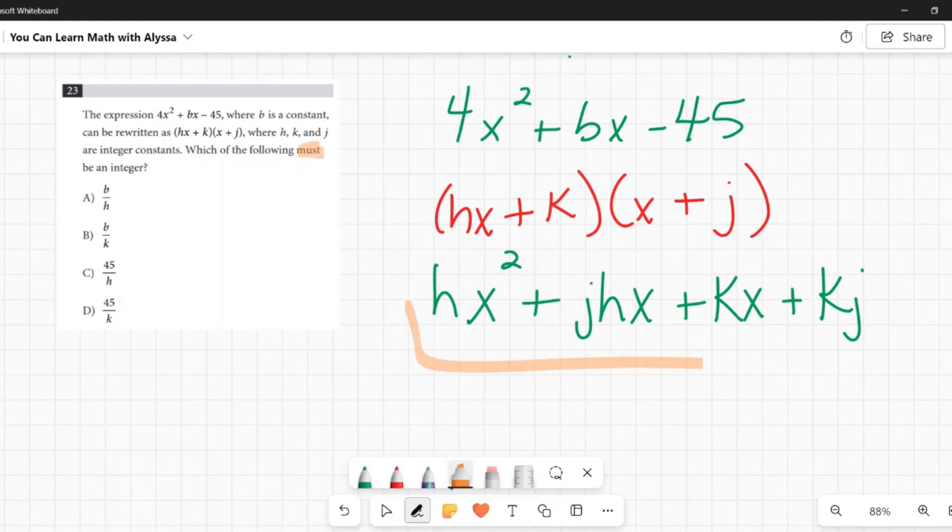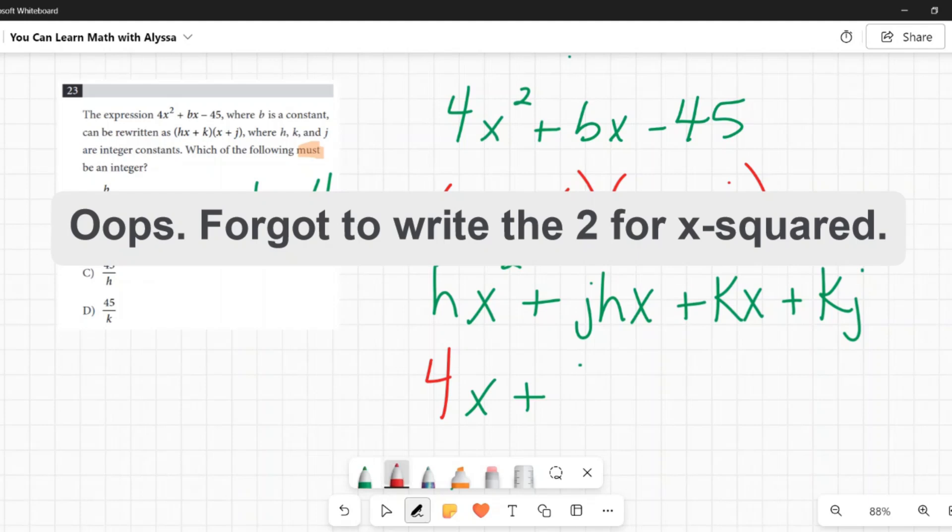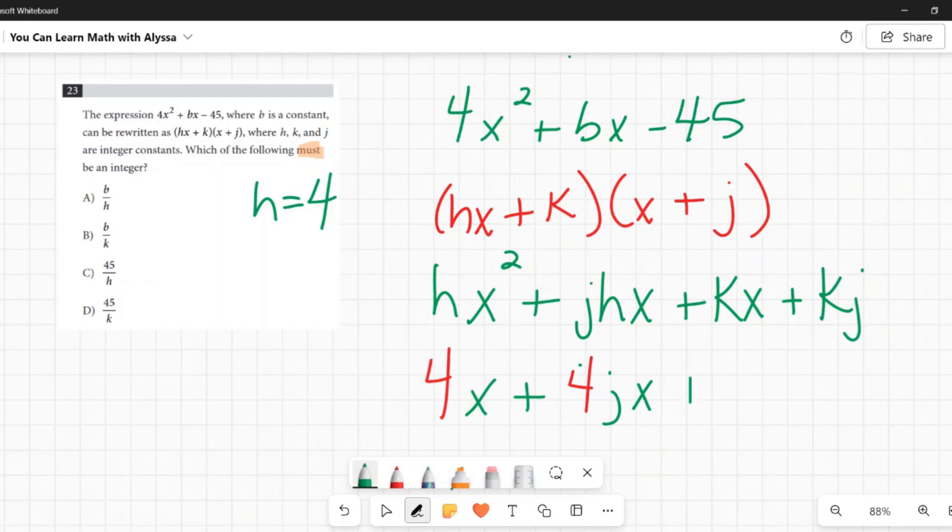Now if we compare these, compare what we got here to what we have here, you'll notice a couple of things. Well, one, we know that h has to be 4, right? It's the number in front of the x squared. It has to be 4. So I'm going to write that over here. h equals 4. And I'm going to go ahead and replace it. There we go. 4 times j times x plus k times x plus k times j.